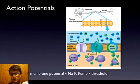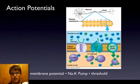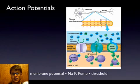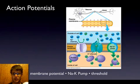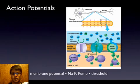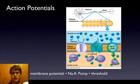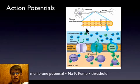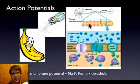The action potential is really important — it's how information is sent down the neuron. If you think it works like electricity, it doesn't really work that way. It's more like chemical dominoes falling over — that's the best way to think about it. A good way to think about a neuron is that it's like a salty banana.